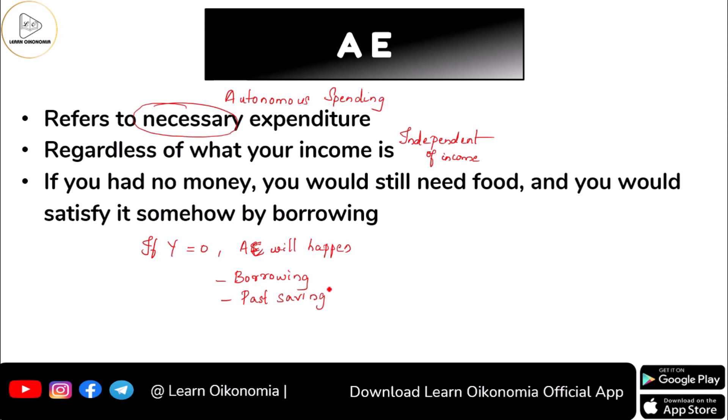Why do you go for autonomous spending? Because even if your level of income is zero, you need to consume food, you need water, you need shelter, and you need clothes to wear. You will not get any of these for free — you have to pay for them. For that reason, you will either borrow or use your past savings if your income is zero.